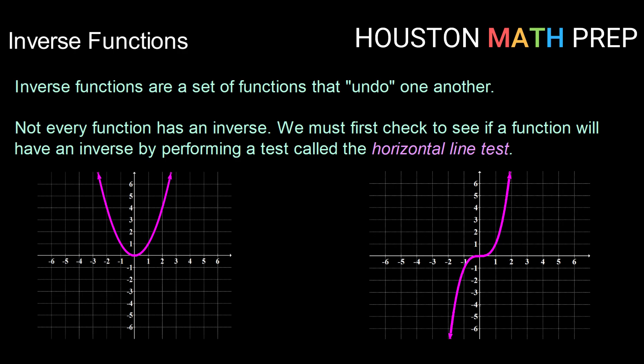So the vertical line test tells us whether or not the graph that we're looking at is a function. So kind of the reverse of that is to check for the horizontal line test to see if there would be an inverse function.